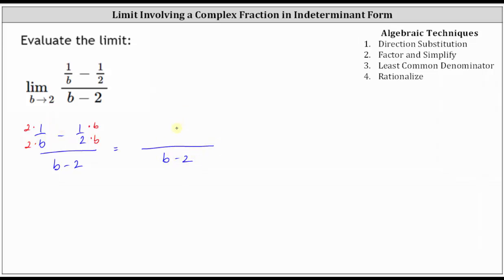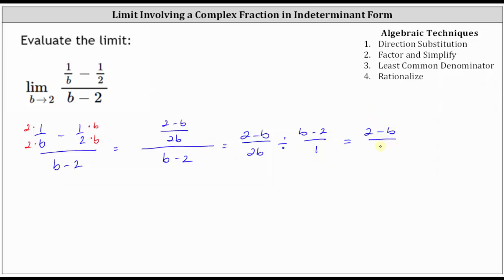Now we'll go ahead and subtract. We have a common denominator of 2b in the numerator. Subtracting gives us two minus b in the numerator. Remember, a fraction bar represents division, so we can write this as (two minus b) all over 2b, divided by (b minus 2). Dividing by (b minus 2) is equivalent to multiplying by its reciprocal, giving us (2 minus b) over 2b times 1 over (b minus 2).